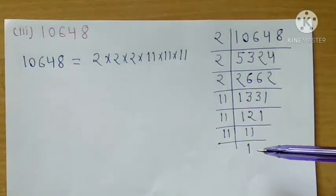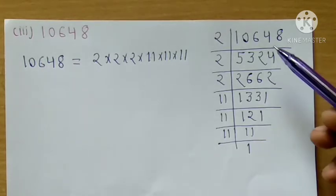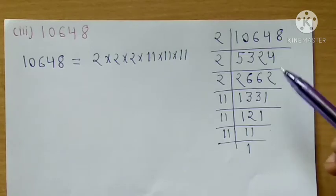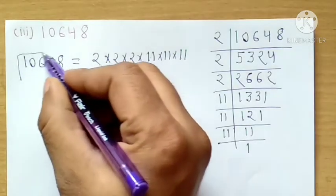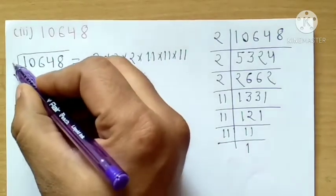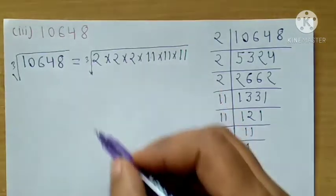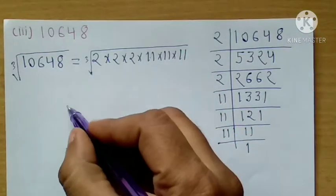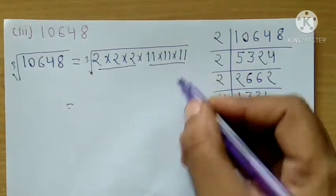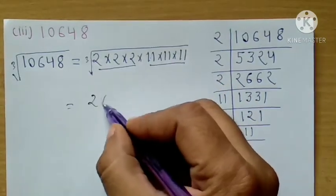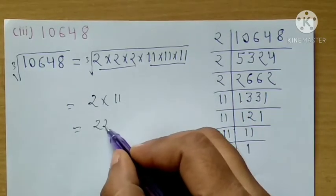Prime factors are used here. After finding the prime factors, we create the cube root symbol. We create groups of three identical factors. We have a pair of 3s and a pair of 11s. So here is 11, and the answer is 11.